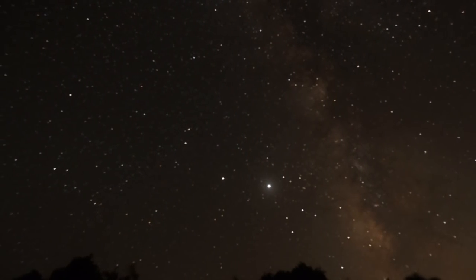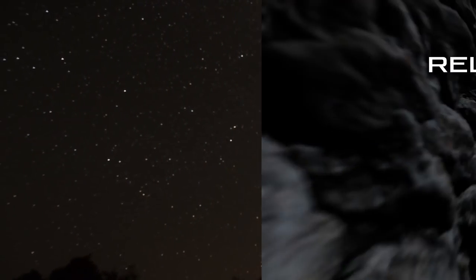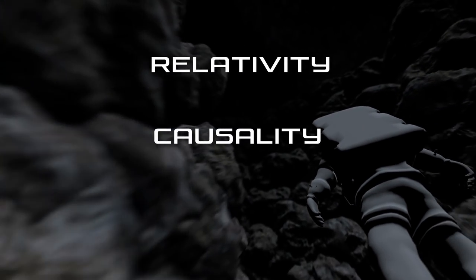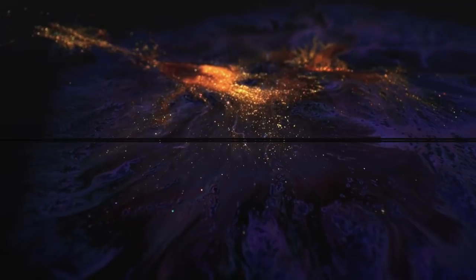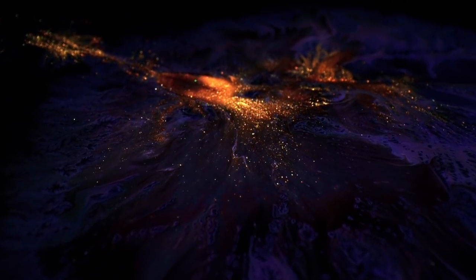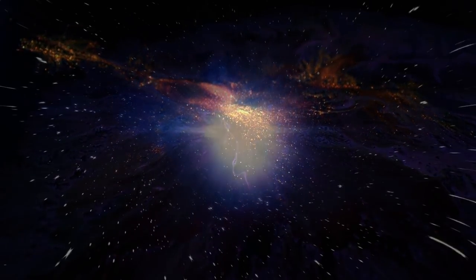If you allow faster-than-light travel and communication, then you break causality. And when causality breaks, you are allowing time travel. In a nutshell, the universe is asking us to choose two of these three: relativity, causality, and or FTL. The universe has made its choice already for us by picking relativity and causality.